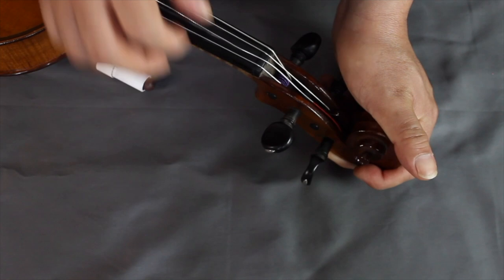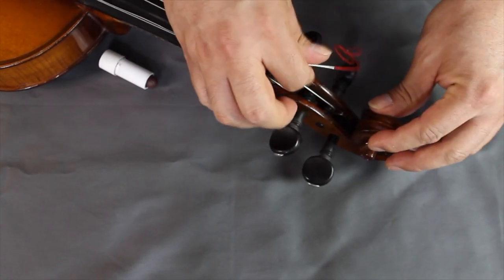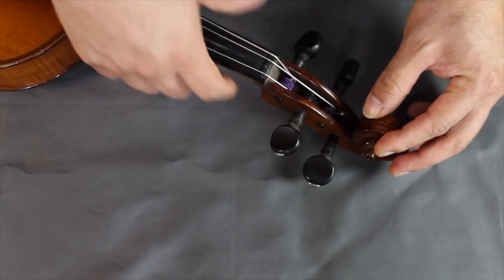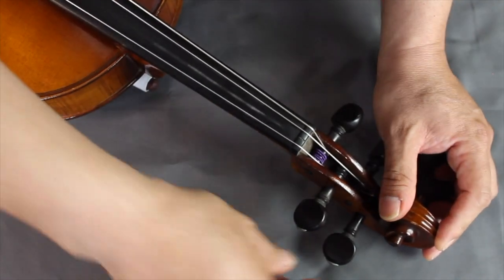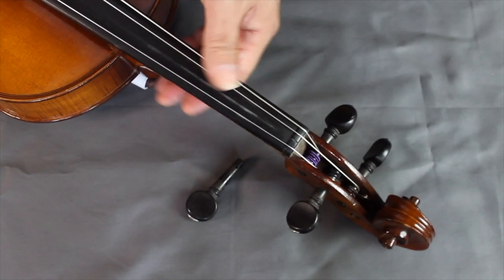There we go. So now that came loose. I'm going to remove the string. We don't need to remove it completely. I can just leave it there. Okay, so now I'm going to take the peg out. Let's put the viola aside for a little bit.